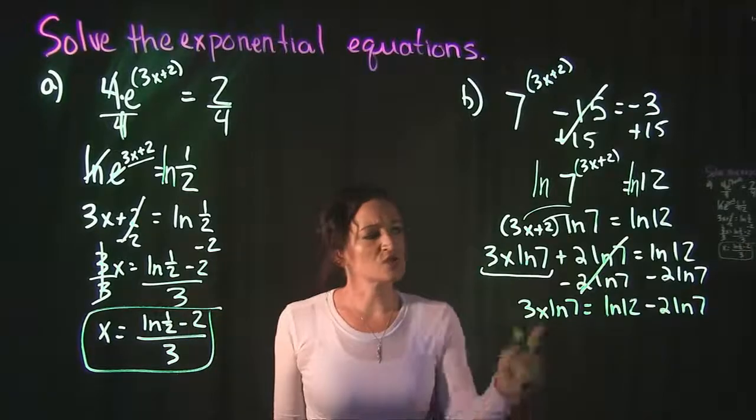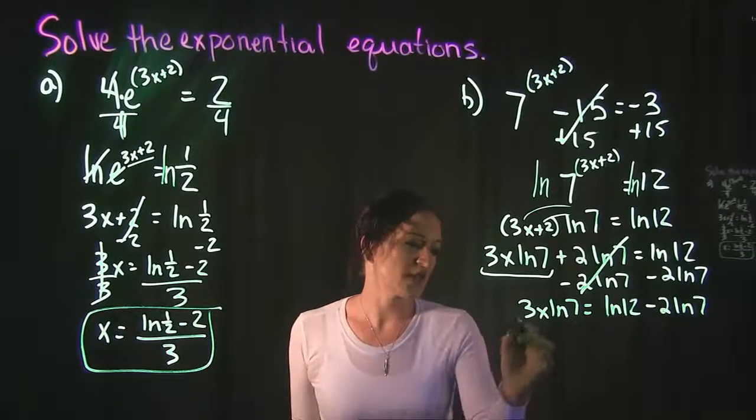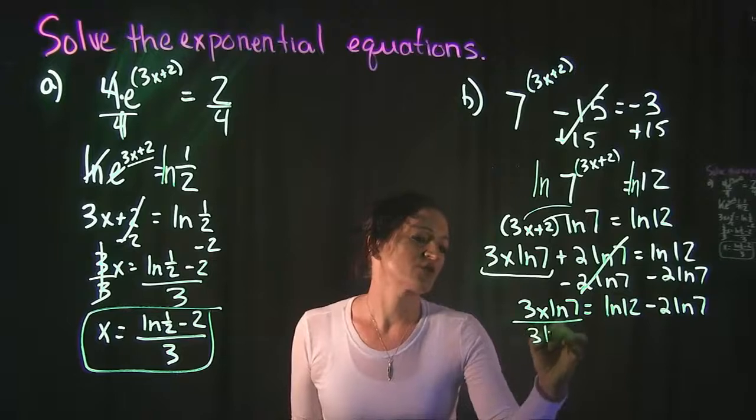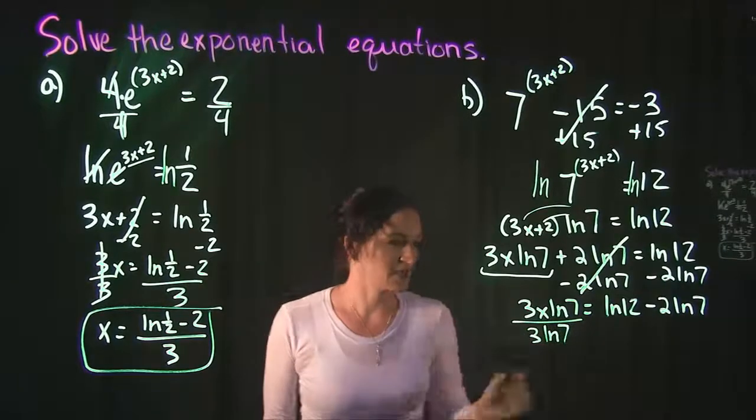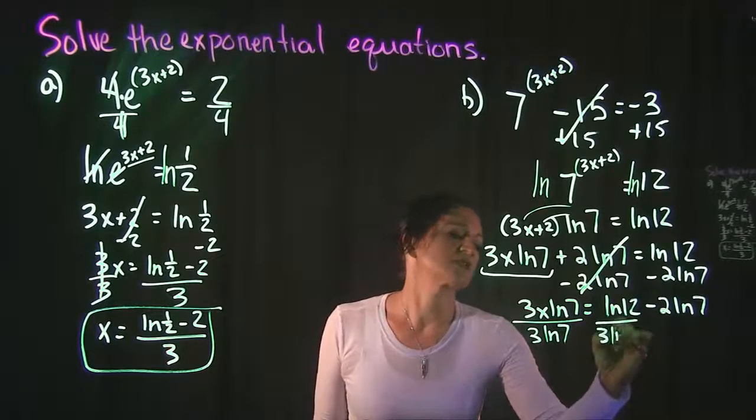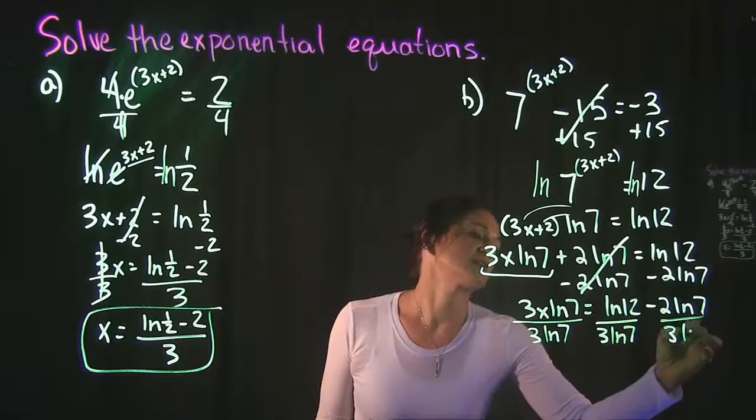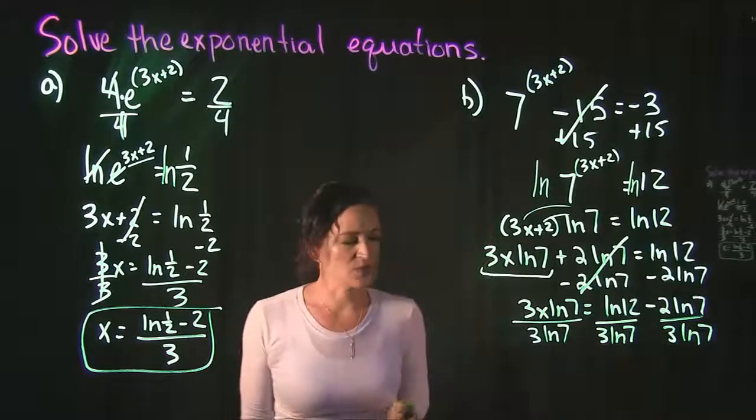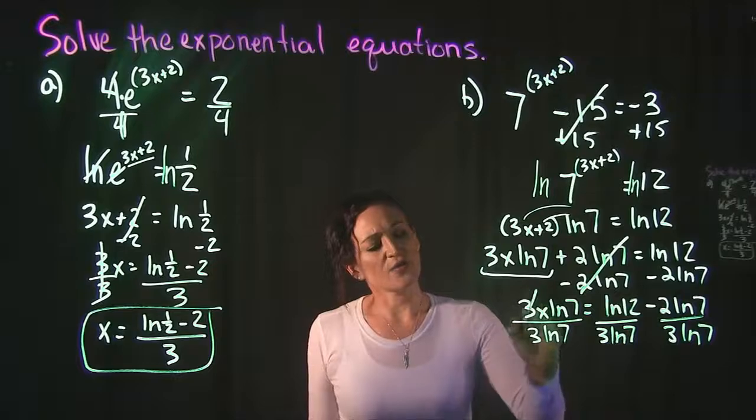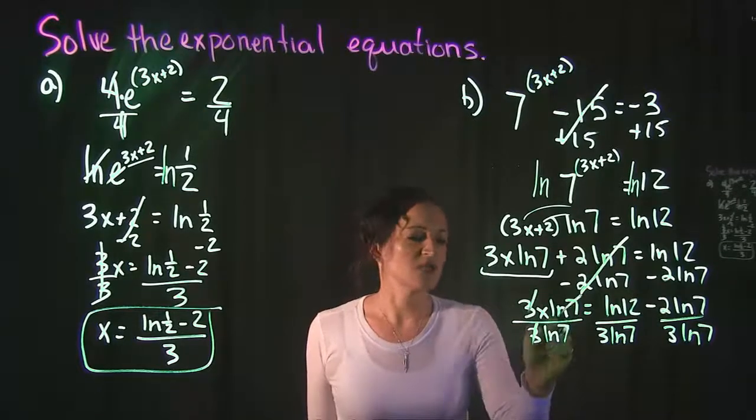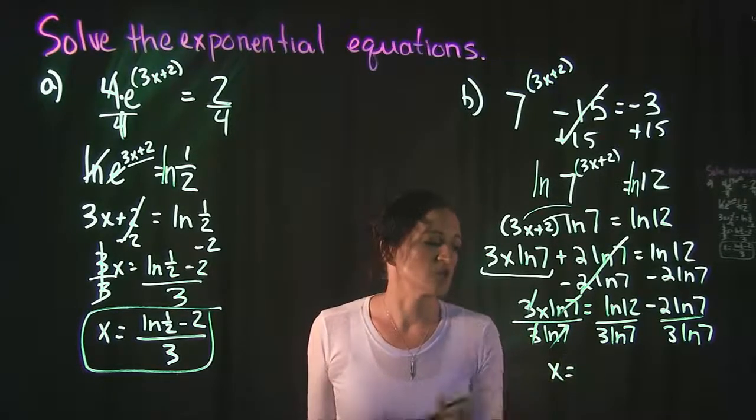Now we're trying to solve for x. So we want to get rid of everything else. I'm going to divide by 3 and divide by ln 7. So everything gets divided by 3 ln 7. On the left, 3 over 3 cancels, ln 7 over ln 7 cancels, leaving us with x.